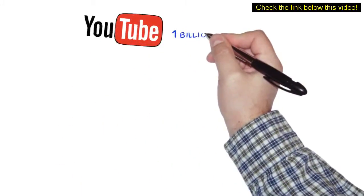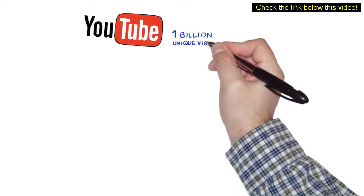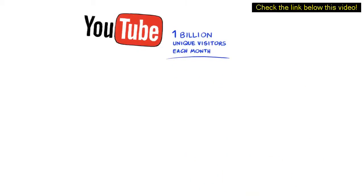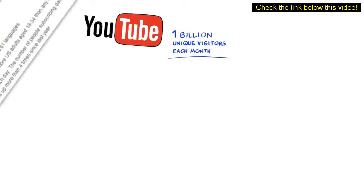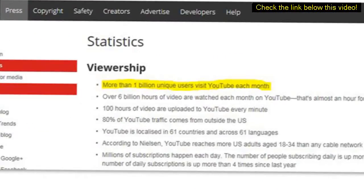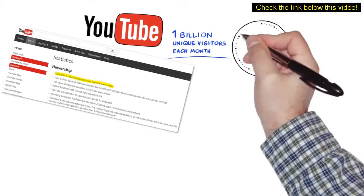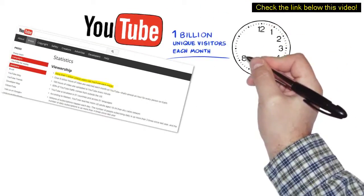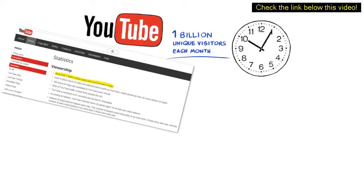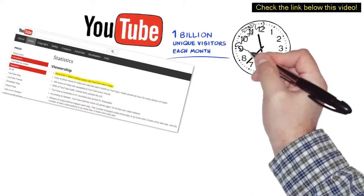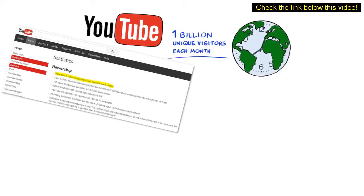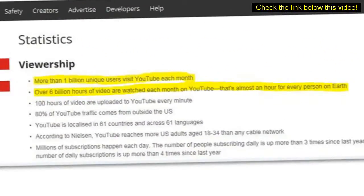Did you know that YouTube gets over 1 billion unique visitors each month to its website? Now you do. And did you know that over 6 billion hours of videos are being watched each month on YouTube? That's almost one hour for every person on Earth.